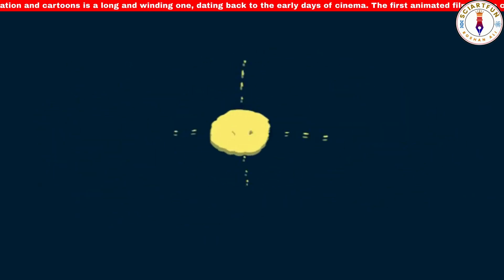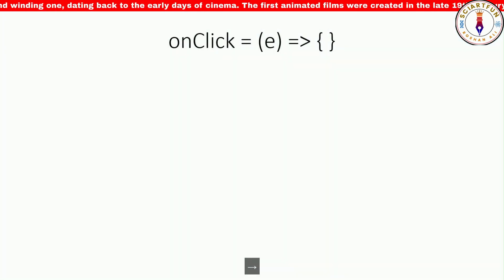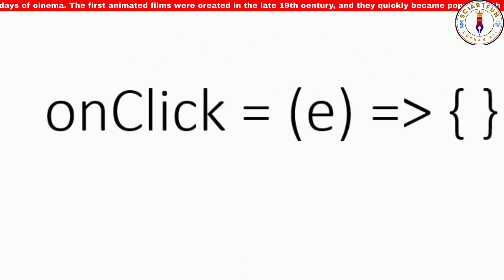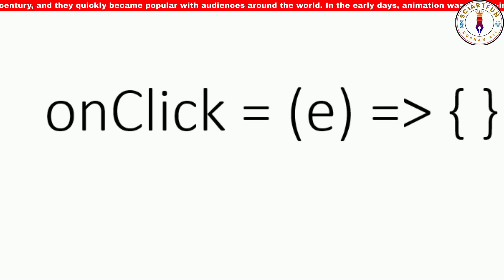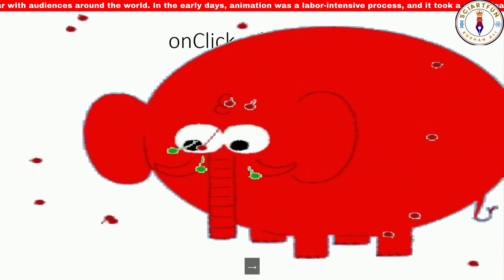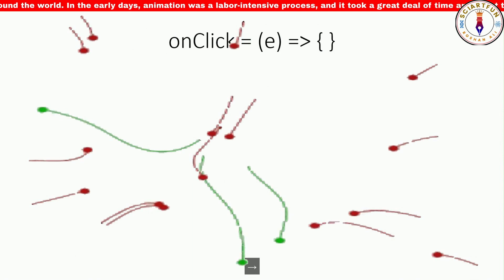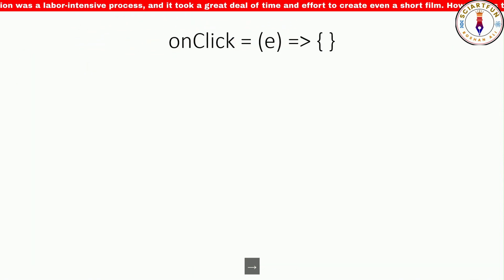Hi everyone and welcome to SciArtFun. In this video I'm going to be showing you how to use the onclick property in Algodoo. The onclick property allows you to write code that will run when you click on an object. This can be used to create different kinds of animations and simulations in Algodoo. The onclick property is a very powerful tool that can be used to create interactive simulations and animations.